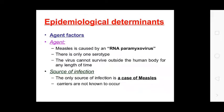Epidemiological determinants — agent factor: measles is caused by an RNA paramyxovirus. There is only one serotype. A serotype refers to the serological and antigenic distinctions among varieties of microorganisms, such as a subgroup of a species of bacteria. The virus cannot survive outside the human body for any length of time.